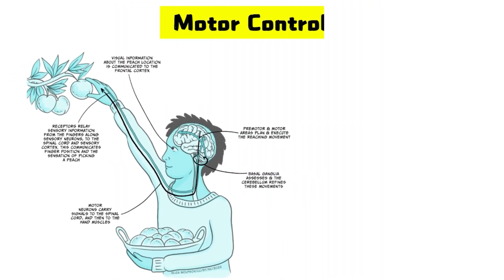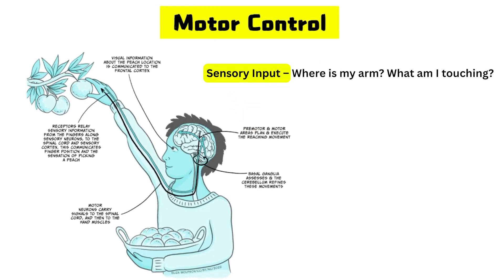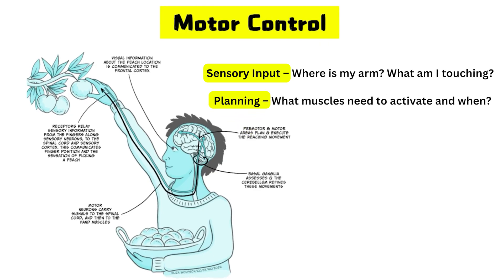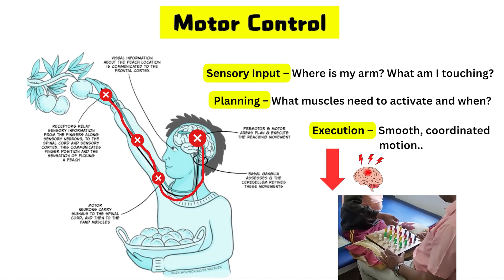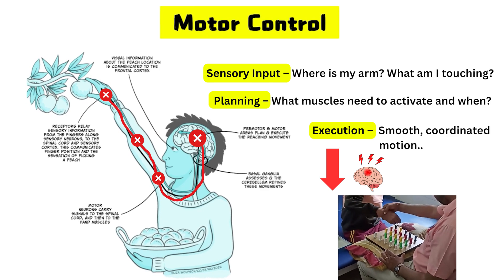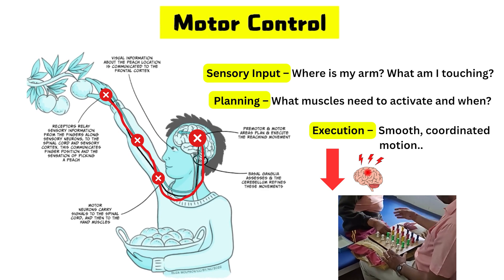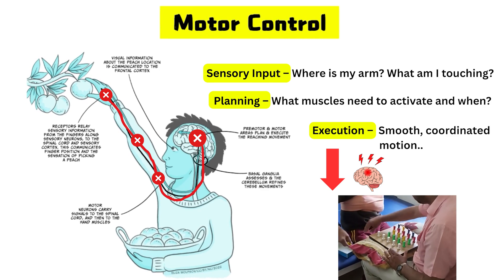Use it and improve it. That's why MRP avoids compensation and encourages the use of the affected side early and often. Motor control is how the brain plans and executes movement. It happens in steps: sensory input — where is my arm, what am I touching; planning — what muscles need to activate and when; and execution — smooth, coordinated motion. After a stroke, motor control is often disrupted; movements become awkward, delayed, or effortful. MRP helps retrain these motor control pathways through structured practice and task repetition.